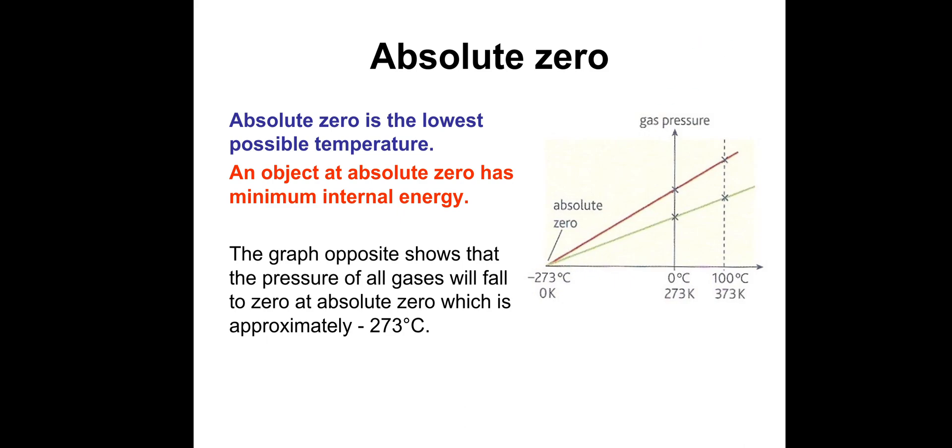However, we know what absolute zero is because we can plot points of pressure against temperature, keep plotting points and then fit a line of best fit and extrapolate it out. This is the lowest point. It's actually minus 273.15 degrees Celsius, and that's equal to zero Kelvin.